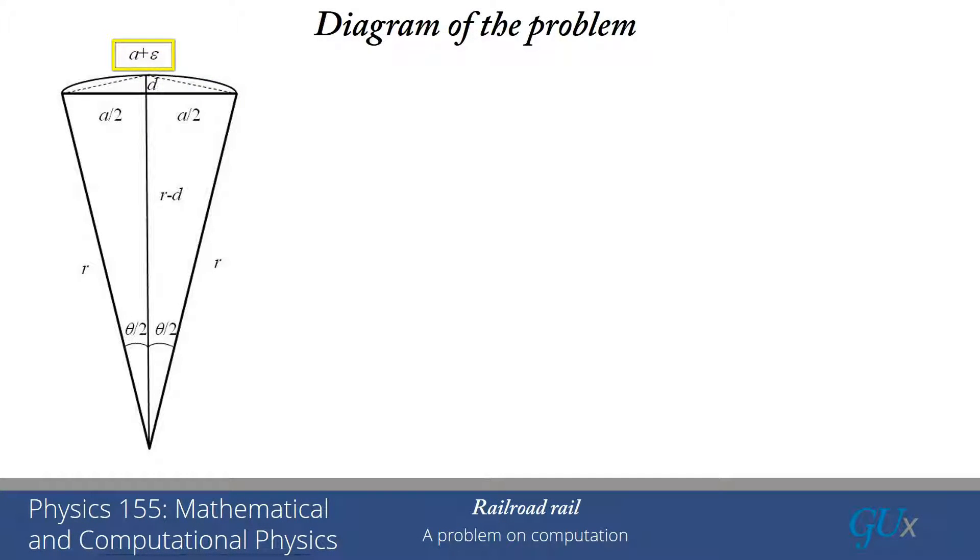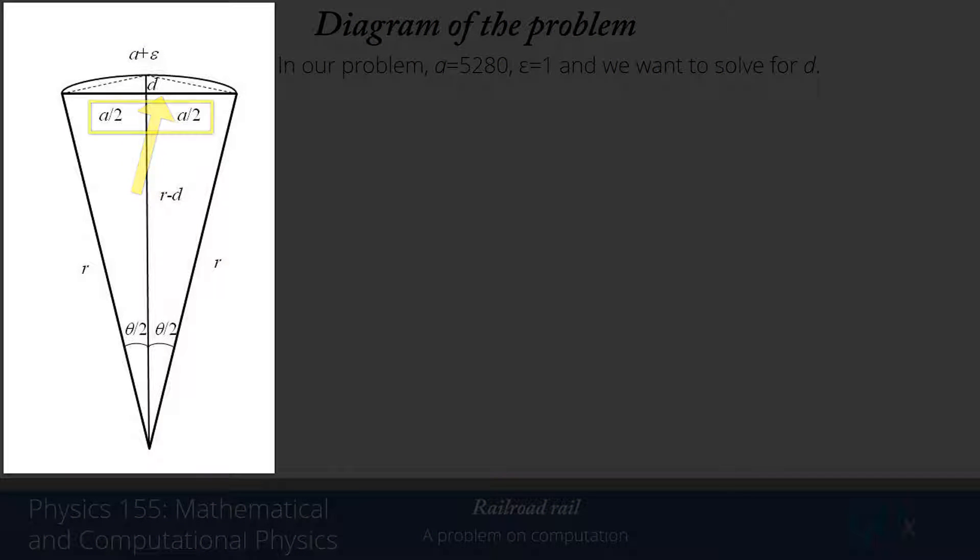On the left here we have a picture of the railroad rail problem. On the top in the curved area, that is the curved railroad rail. It has a length of A plus epsilon. For us, A is 5,280 feet and epsilon is equal to 1. The straight line that is the cord underneath that arc is 5,280 feet.